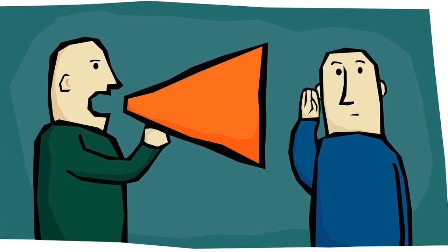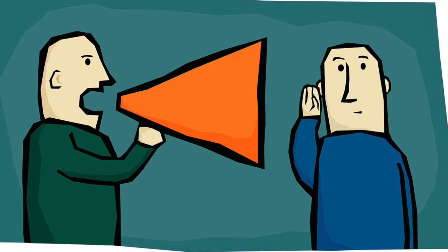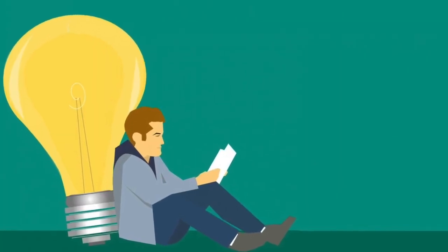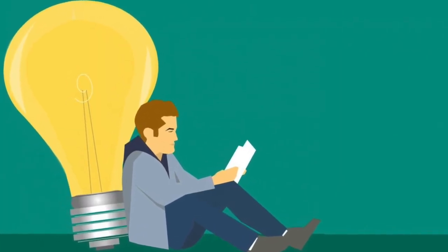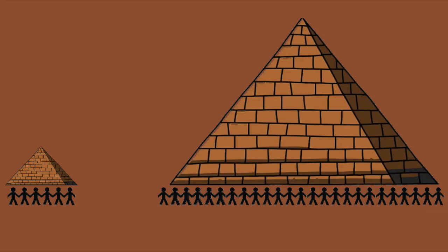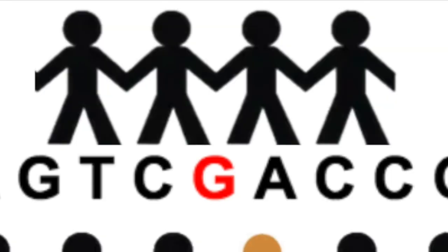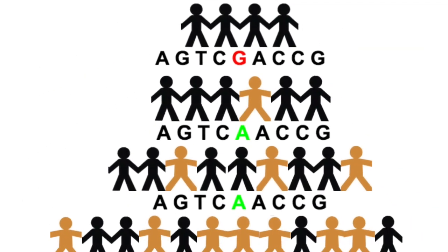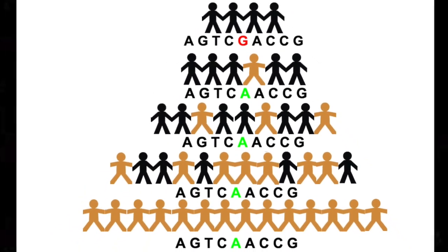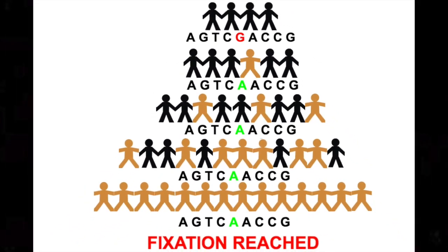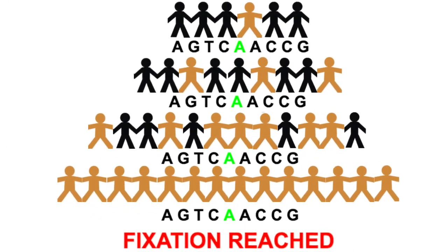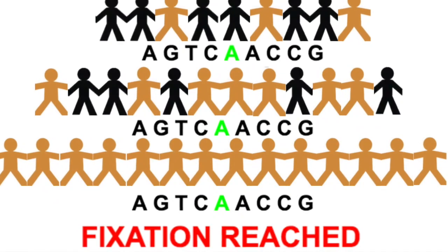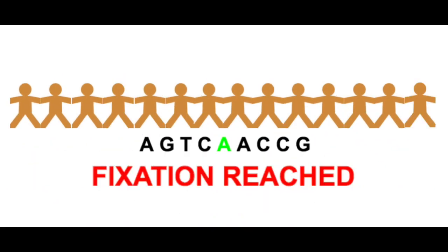Before we move on, let me explain what fixation means, because you will need to know this to understand substitution differences. Look at these two pyramids. At the base of these pyramids you see two different populations of people. The top of the pyramid represents fixation — that is, when a new mutation arises and makes its way through the population, generation after generation, until this new mutation becomes fixed in that population, meaning everyone now has this new mutation. It has become a fixed substitution.